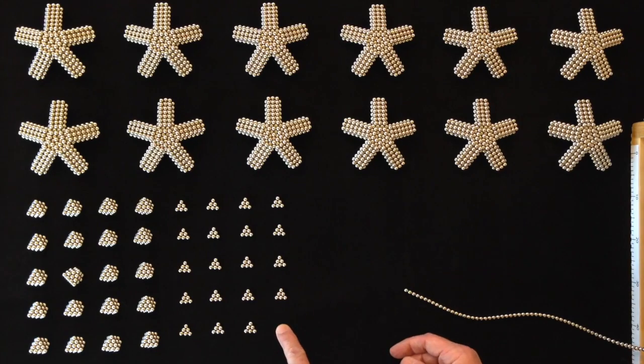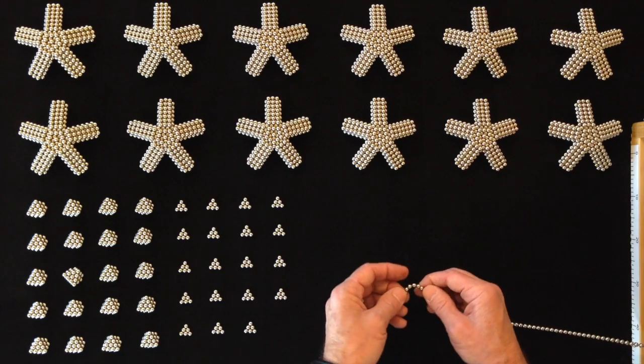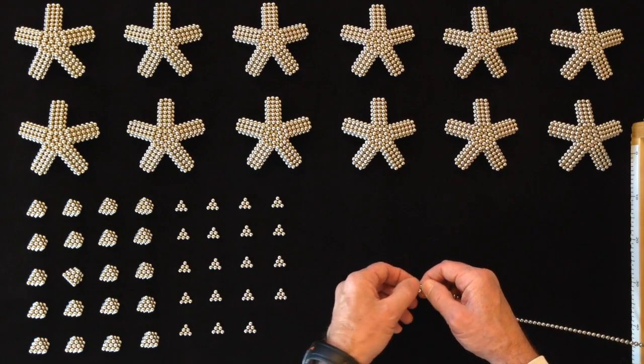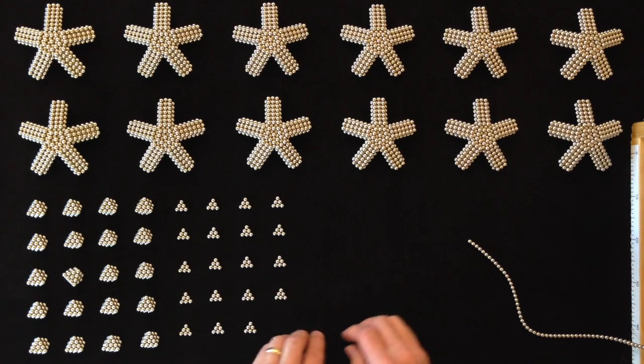Then we'll also need these to fill in the vertices, the top layer of the vertices. And those are made by creating a hexagon out of six magnets and pinching it into a triangle.